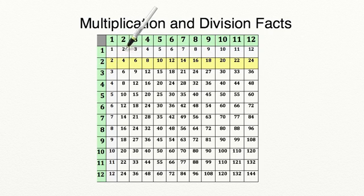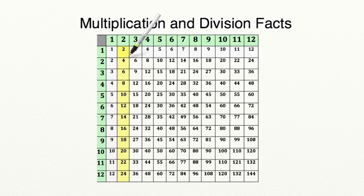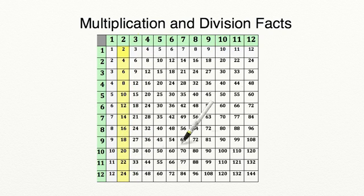Now let's look at this column going down. We're going to multiply 2 times 1 to equal 2, 2 times 2 to equal 4, 2 times 3 to equal 6, and so forth. As you can see, we're still skip counting by 2 — we just changed the order of the numbers we're multiplying by. This is a great tool you can use to practice your multiplication.